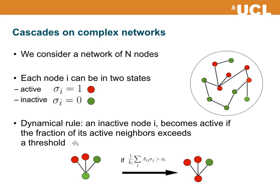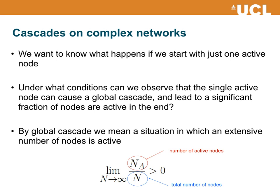There is a simple dynamical rule for nodes to become active: a node which is inactive becomes active if the fraction of its active neighbors exceeds a given threshold. The interpretation of the model is, for instance, in terms of the propagation of news, information, or the adoption of innovations in a population of agents. We are particularly interested in understanding under what conditions the activation of a single node at the beginning will trigger a global cascade in the network, and eventually lead to a large number of nodes becoming active.